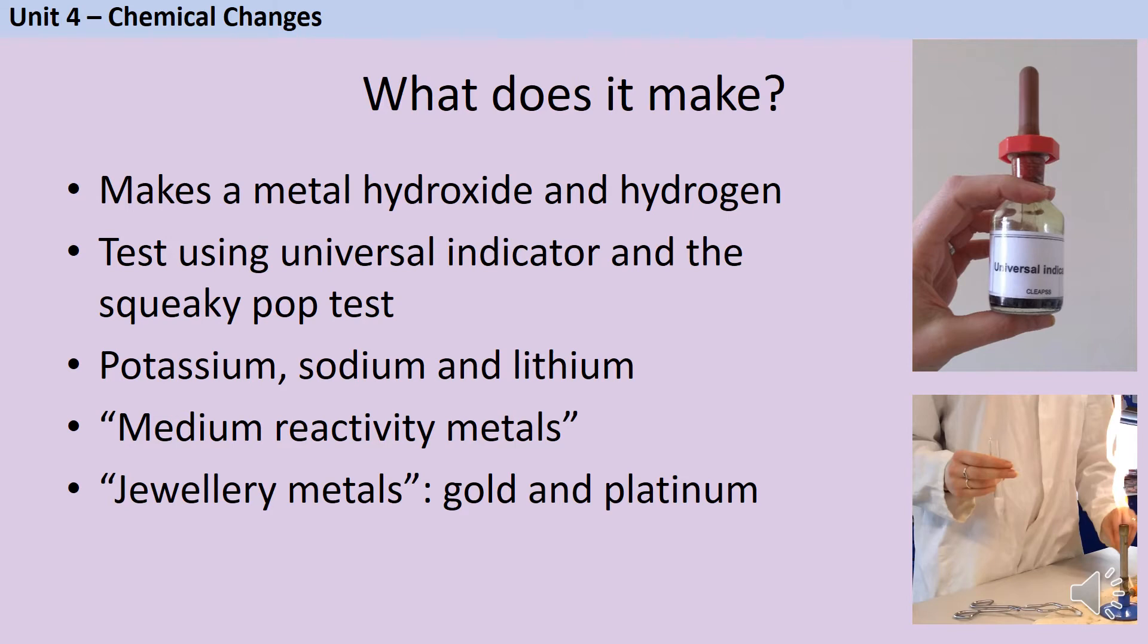We can split our metals into three groups. Potassium, sodium and lithium from Group 1 react very rapidly with water. You'll see lots of bubbles being produced. Then we have our medium reactivity metals, things like magnesium and iron. If you put these in water, you won't see an obvious reaction. You probably won't even see any bubbles. But if you add some universal indicator to that water, over a series of quite a long time, it will gradually turn blue, showing you that this metal hydroxide is being produced. Finally, we have our jewellery metals, those very unreactive metals. And because these are less reactive than hydrogen, they can't displace the hydrogen from the water, and so no reaction will happen at all.